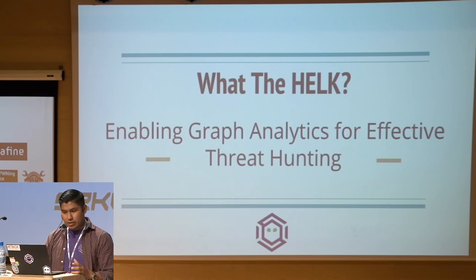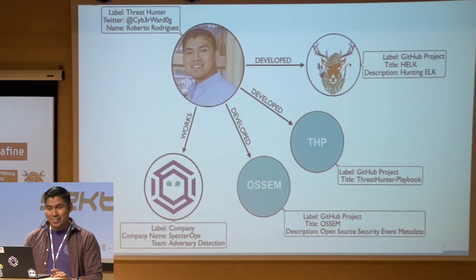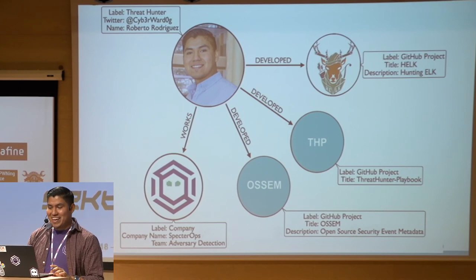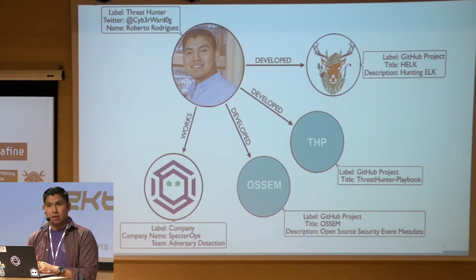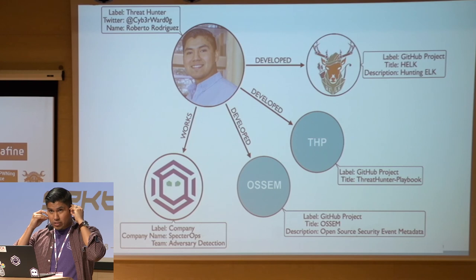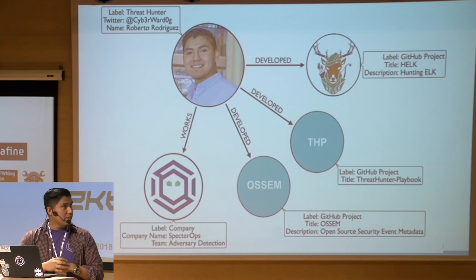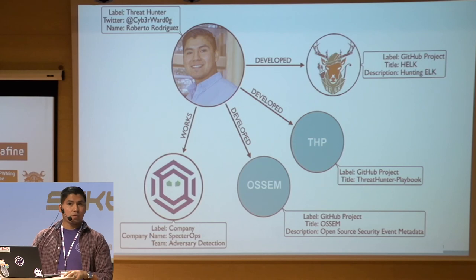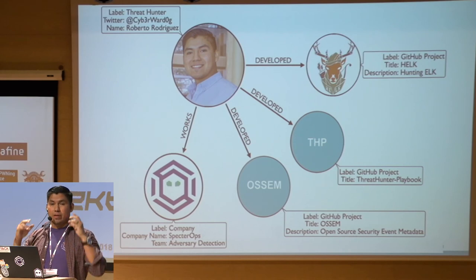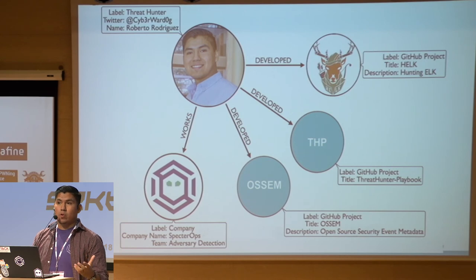This capability is graph analytics for effective threat hunting. Since we were talking about graphs, I figured that would be a clever way to present myself. I'm a security analyst, part of the adversary team at SpecterOps. I also develop a few projects on GitHub — one of them is the HELK, the ThreatHunter Playbook, and the Awesome Security metadata project, which is an open-source security metadata effort to standardize schemas for SIEMs.